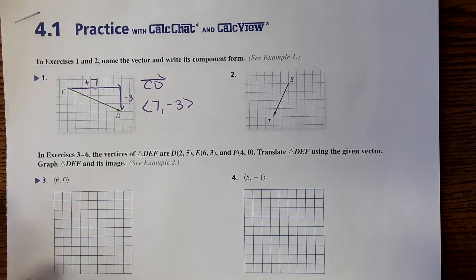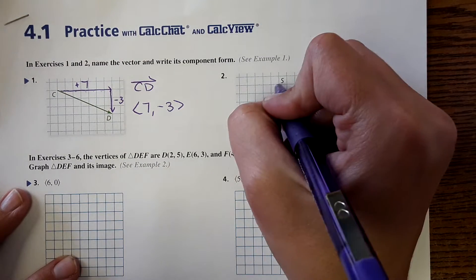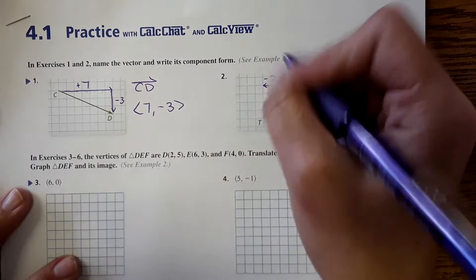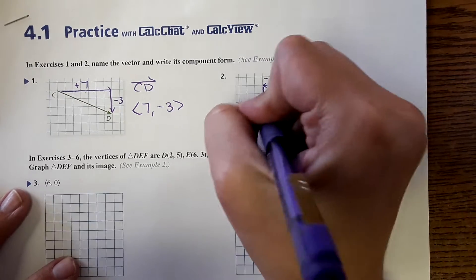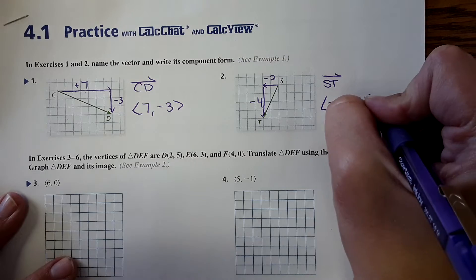And then for the next one, same process, vector ST, and then it's horizontal change. So it's going this way, so that would be a negative 2 since it's going to the left, and down 1, 2, 3, 4, negative 4. So negative 2, negative 4, like that.